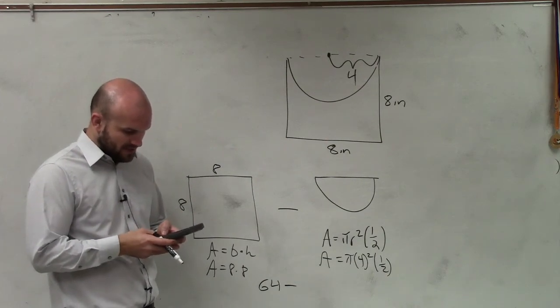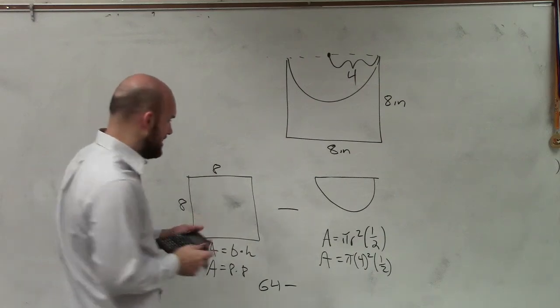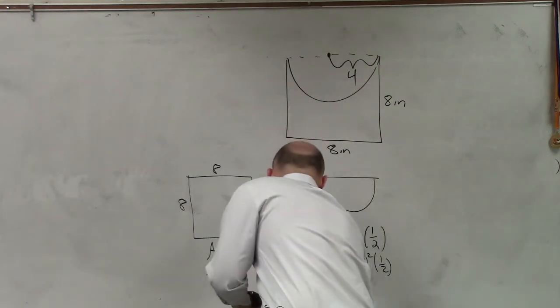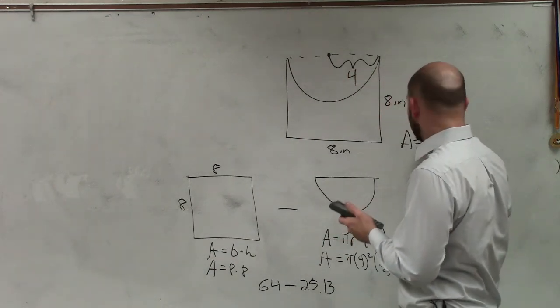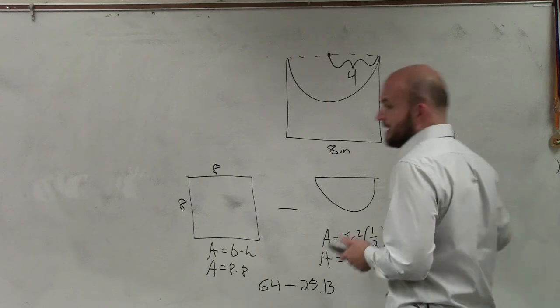Hold on. 64 minus second answer. And therefore, the half circle is 25.13. So the area equals 38.9.